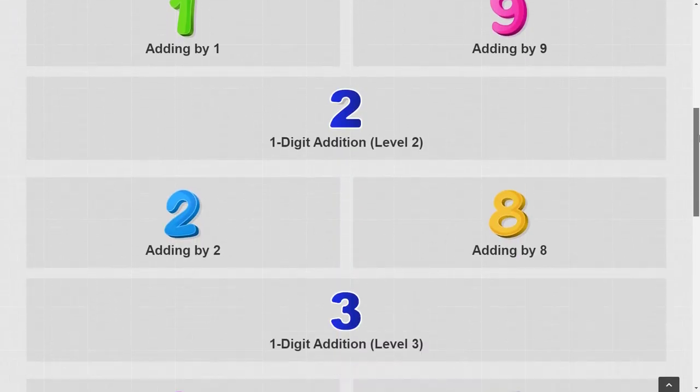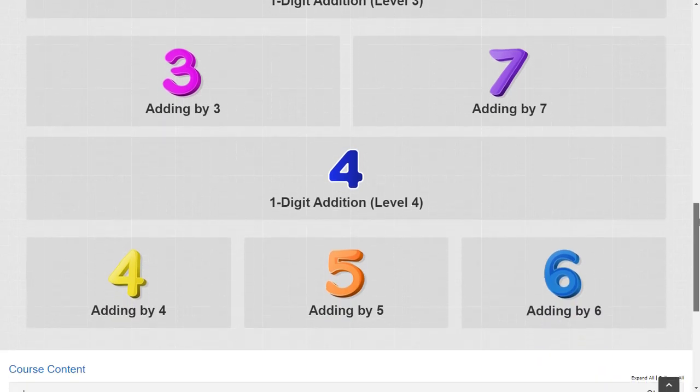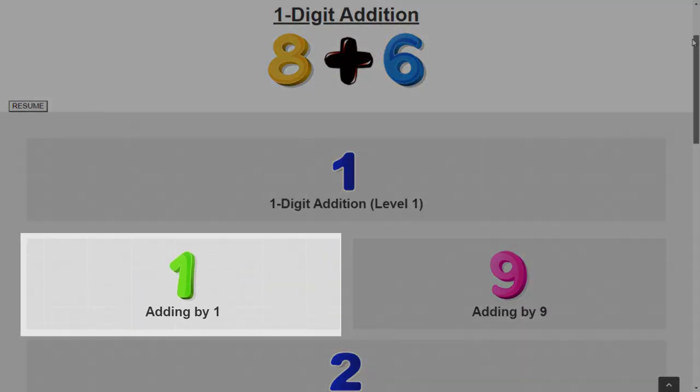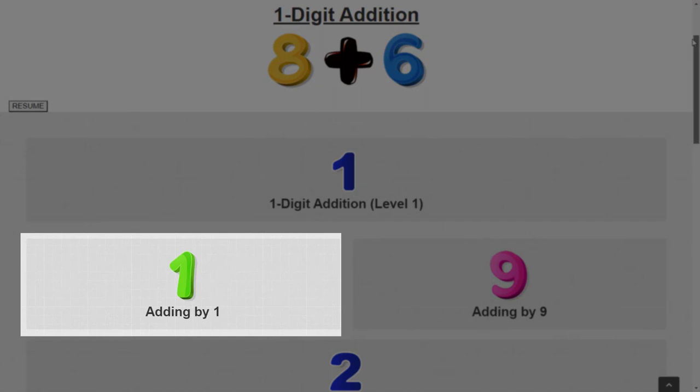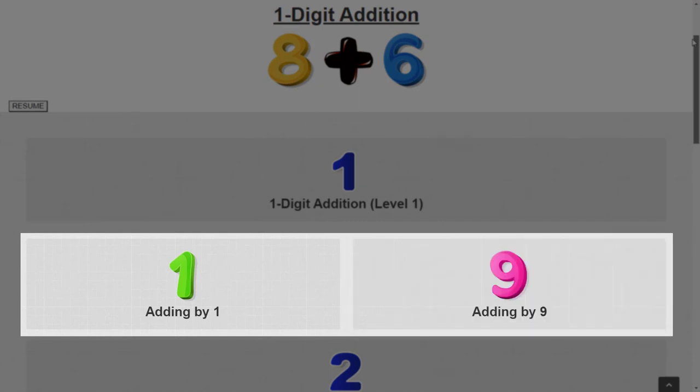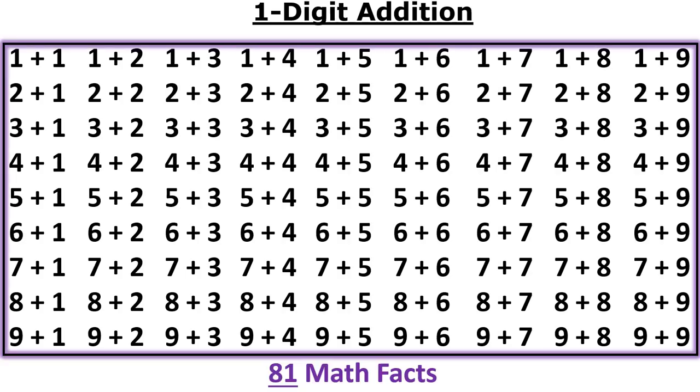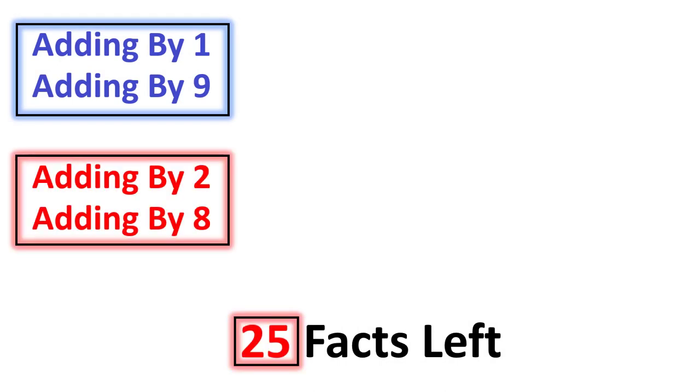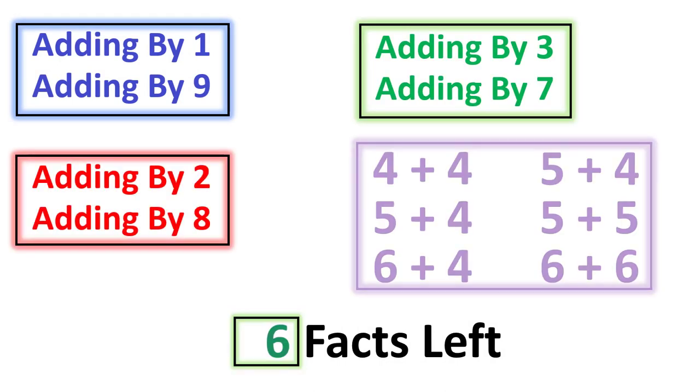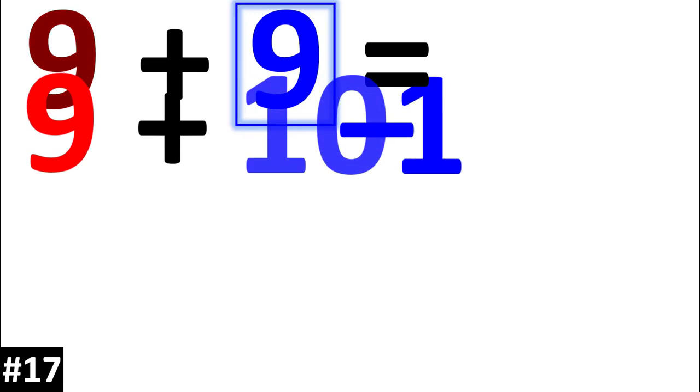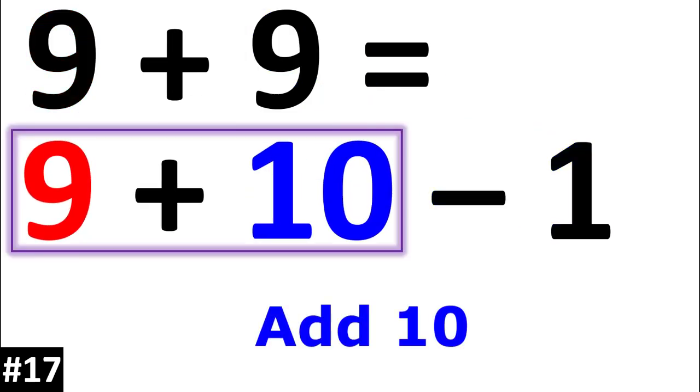The one digit addition section is strategically organized into 4 different levels, starting with an easy rule to add by 1 and by 9. Instead of students having to learn 81 addition facts, after learning 6 key rules there are only 6 facts remaining. Each rule can be quickly learned through visual repetition as students advance through the video section.